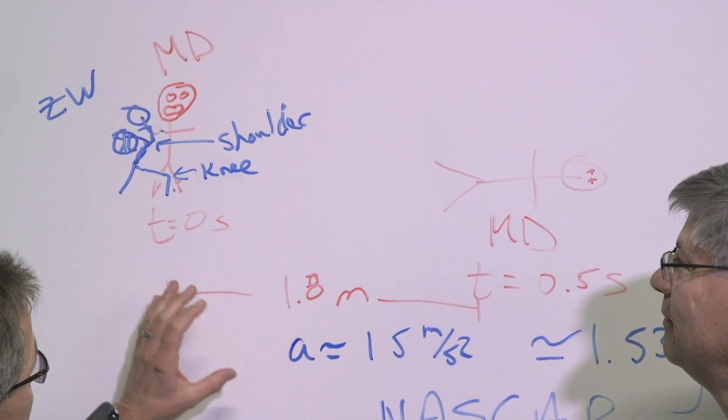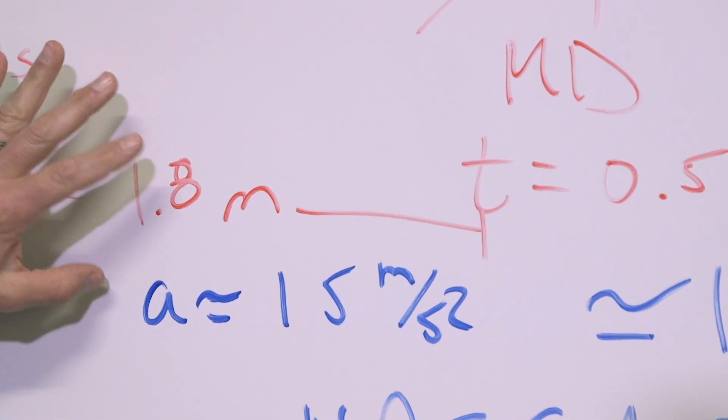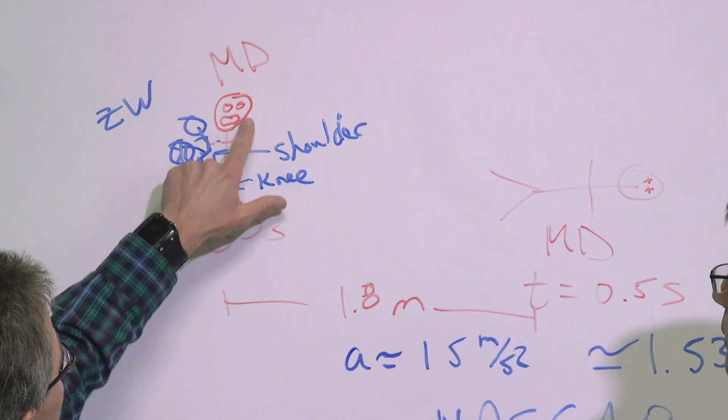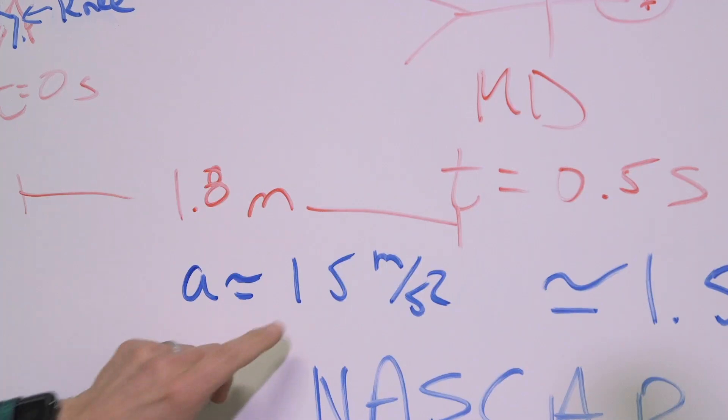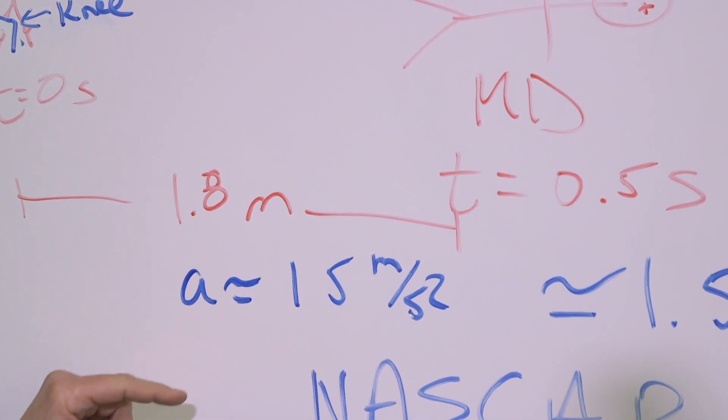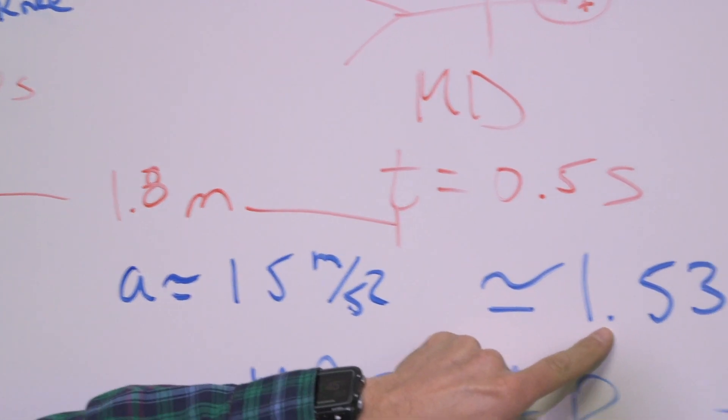I went through and did some calculations. I figured out using conservation of energy, conservation of momentum, that the acceleration that Dolezal experienced during this collision was about 15 meters per second squared. So it's one and a half g's, about.